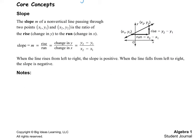Let's practice finding slope given two points. We're going to use negative 5 comma 10 and 12 comma negative 7. Your x numbers are negative 5 and 12, and your y numbers are 10 and negative 7.